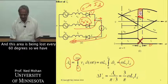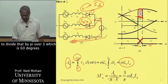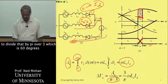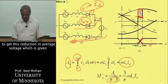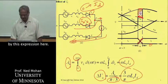That's the area in volt radians that must be applied across these inductors to make the change in current happen. This area is being lost every 60 degrees. So we have to divide that by pi over 3, which is 60 degrees, to get this reduction in average voltage, which is given by this expression.